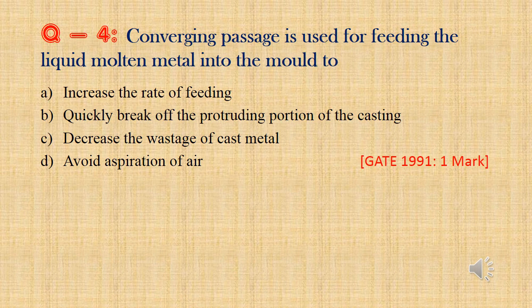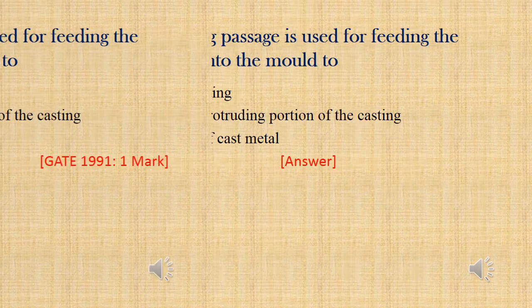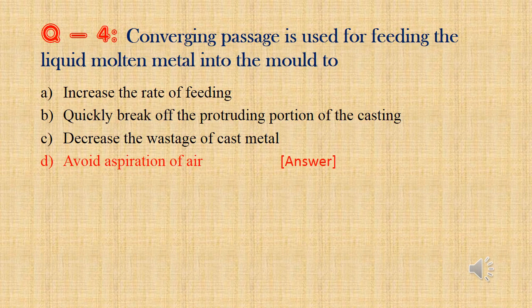Question 4: Converging passage is used for feeding the liquid molten metal into the mold to — Option A: Increase the rate of feeding. Option B: Quickly break off the protruding portion of the casting. Option C: Decrease the wastage of cast metal. Option D: Avoid aspiration of air. Converging passage is the sprue in casting terms. If the sprue is made straight and molten metal is poured, air will fill in the sides of the molten metal and cause air aspiration. To avoid that we use the converging passage. Answer is Option D: Avoid aspiration of air.